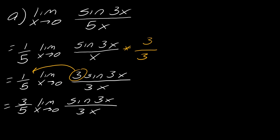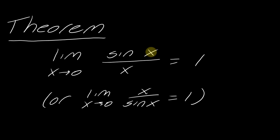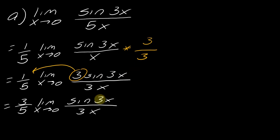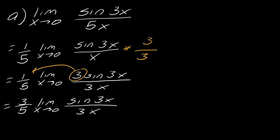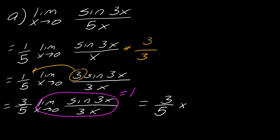Now I've got what I need — this is in line with what the theorem says. I need the exact same thing in the sine argument and in the denominator, so now I've got 3x and 3x. The theorem just says this has to equal 1, as long as you have the same thing in both places. A lot of people think there has to be a 3 out front because there's a 3 in there, but the theorem doesn't say that — this whole piece just equals 1. So my answer is 3/5 times 1, which is 3/5.